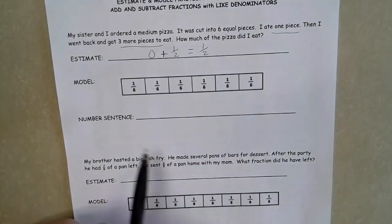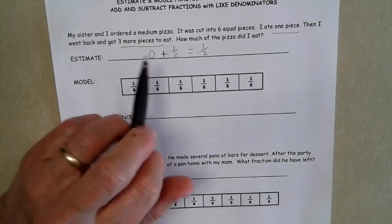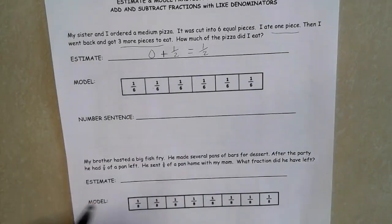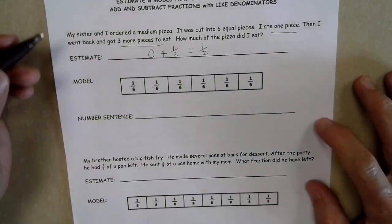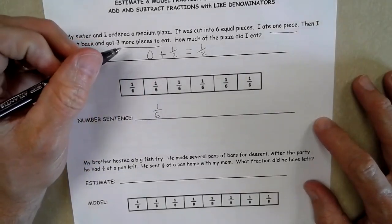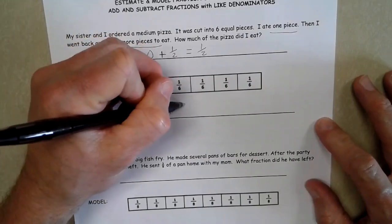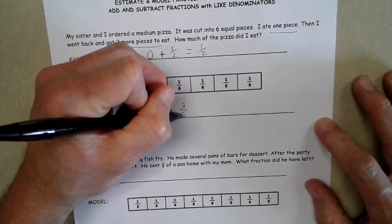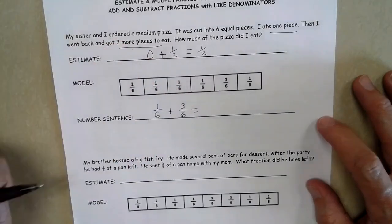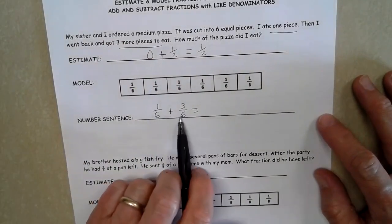So let's look at the problem. It will come up with the number sentence and find our actual answer and see if our estimate for in the right ballpark for that answer. So I know I have one sixth that I ate and then I came back and ate an additional three sixths of that pizza. And now I already have that common denominator.